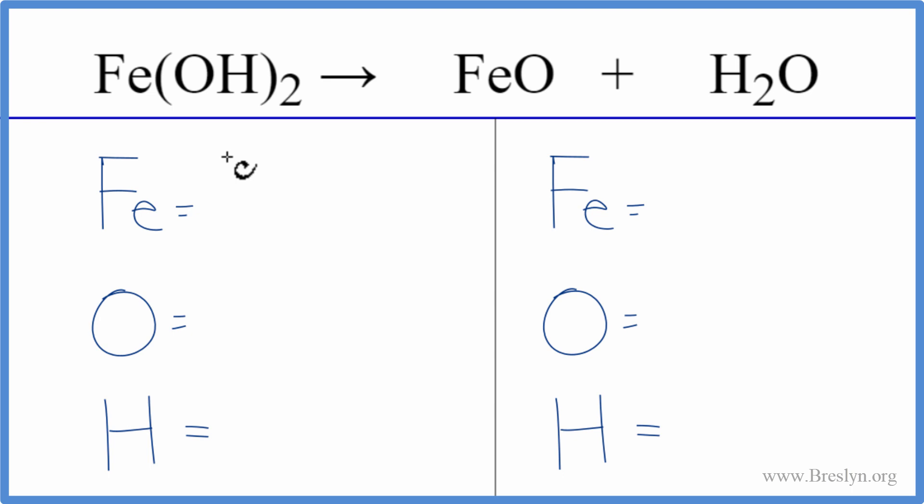Let's balance the equation and count the atoms up first. So we have one iron, and then this two, it applies to everything in the parentheses here. So two times the one oxygen, two times the one hydrogen, we have two hydrogens.